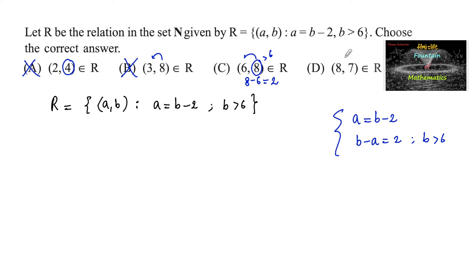Coming to the fourth option, the difference between 7 and 8 is negative 1, so it is also not satisfying the condition. Option D is also ruled out. So we only have option C. Option C is the answer, so we can say (6, 8) belongs to R.